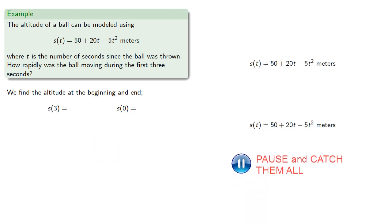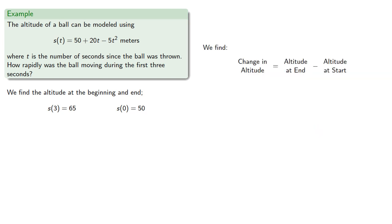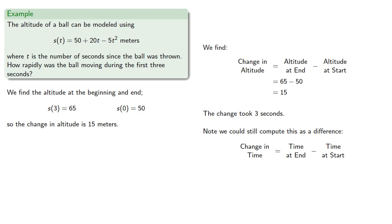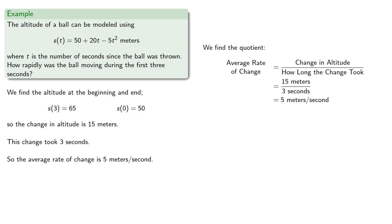We'll find the change in altitude, which is the difference between the end and the start. This was during the first three seconds, so the change took three seconds. We can still compute this as a difference — the change in time is time at end minus time at start, that's 3 minus 0. We find the quotient, change in altitude divided by how long it took, and so the average rate of change is 5 meters per second.